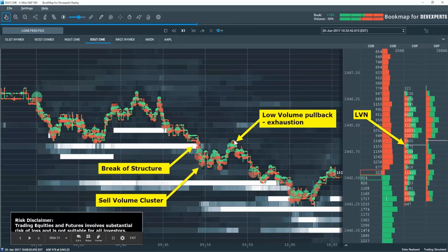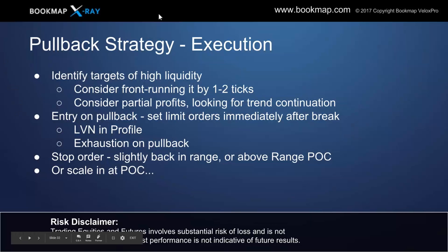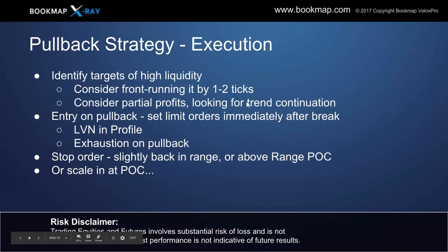We do get a low volume pullback into an area and it starts to exhaust there. That matches up with the low volume node in the profile. For this pullback strategy execution: identify targets of higher liquidity and consider front running again by a couple ticks. If it's continuation and price discovery and you're already up and adding into a position, you may want to move that target further away — look for trend continuation. You can take partials but also look for trend continuation. Entry on the pullback: set limit orders immediately after the break, looking in that low volume node or front running that low volume node area in the profile, because this is an area where volume is going to exhaust.